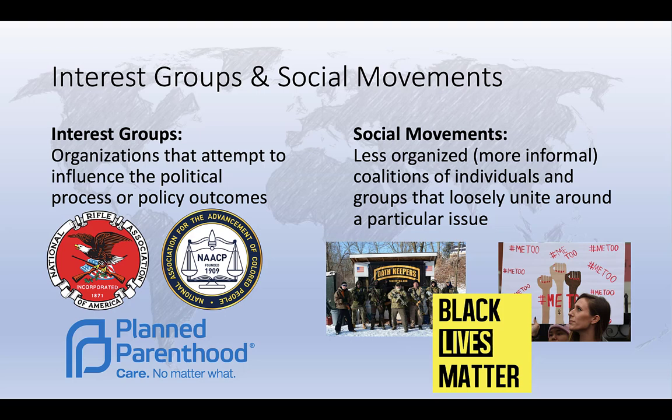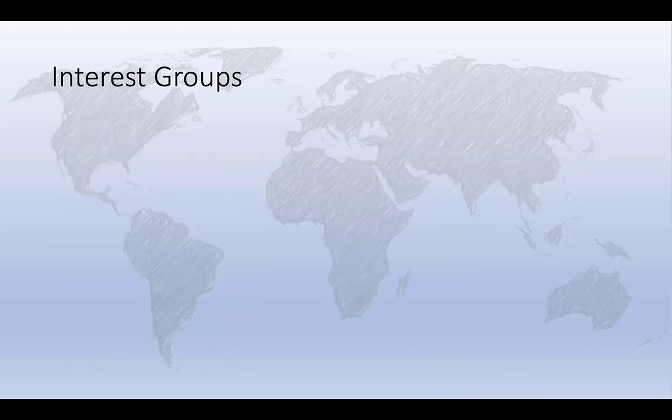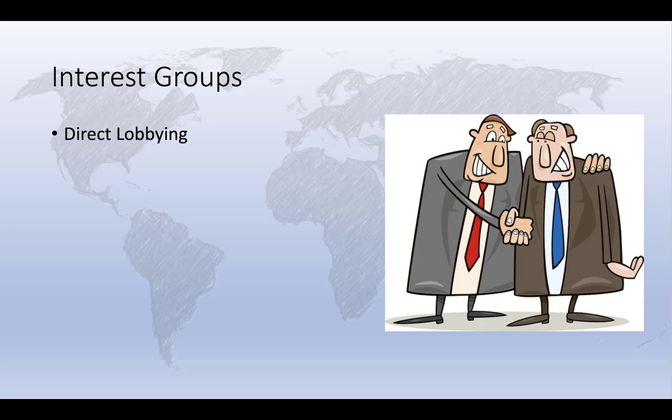For the purposes of this video, we're primarily interested in the role of interest groups. Interest groups may attempt to directly or indirectly influence the political process and the development of policy through a number of avenues. They may directly lobby policy makers, most often elected officials, by providing money, campaign advice, or by mobilizing their supporters in support or opposition to particular candidates.